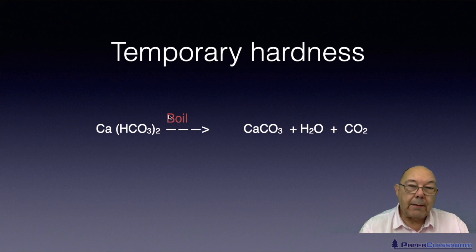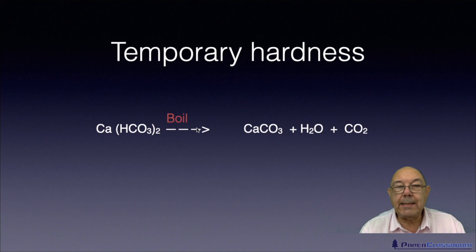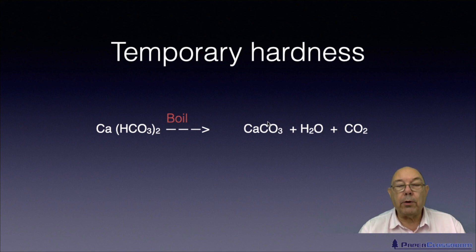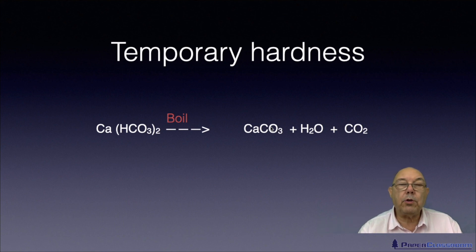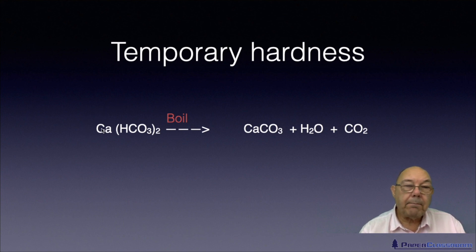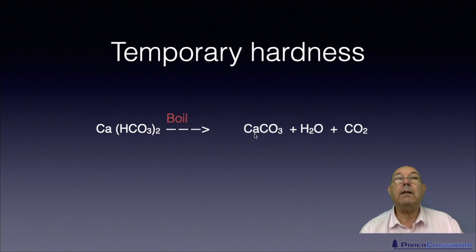Interestingly, the calcium bicarbonate that causes the hard water — if you boil it, putting that heat in causes the reaction to reverse. Calcium carbonate is formed, and normally when you see a pan or kettle that has boiled a lot of hard water, over time you get deposits on the inside of that vessel that everyone calls scale. That scale is actually calcium carbonate. Because it's come out of solution as a solid, the calcium is no longer in solution and therefore you no longer have hardness. So boiling the solution of calcium hydrogen carbonate causes the formation of calcium carbonate — scale — plus water, and CO₂ is released into the atmosphere.